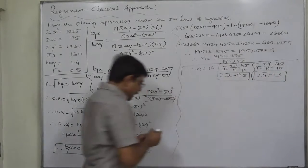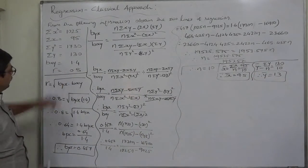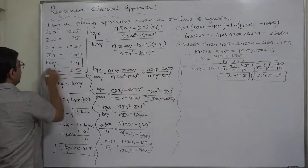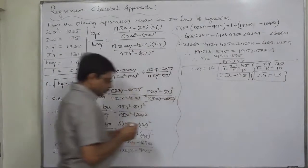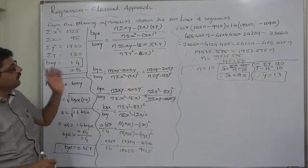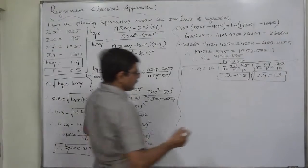Similarly, y bar = 130 / 10 = 13. Now we have both regression coefficients bxy and byx and both means x bar and y bar, so we can find the two lines of regression.